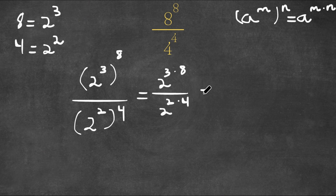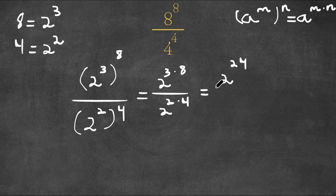This is equal to 2 to the power of 3 times 8 — 3 times 8 is 24 — so we have 2 to the power of 24, over 2 to the power of 2 times 4. 2 times 4 is 8, so we have 2 to the power of 8.